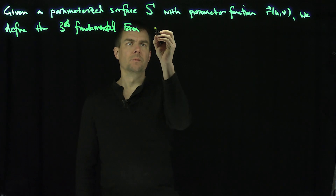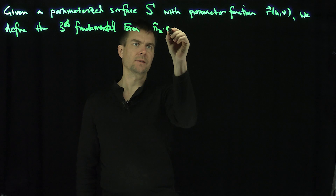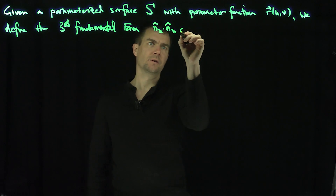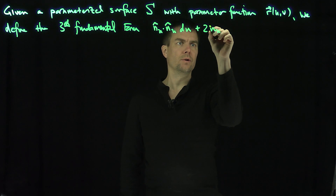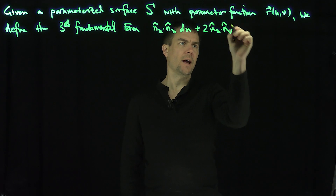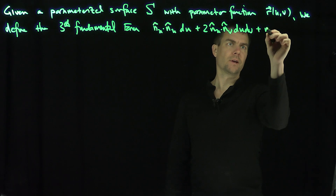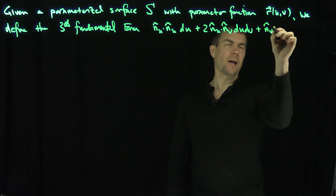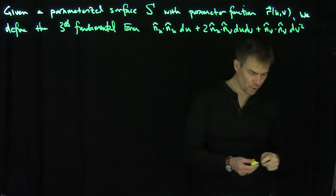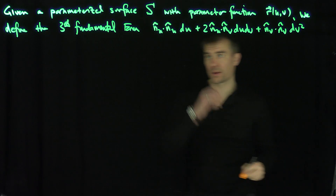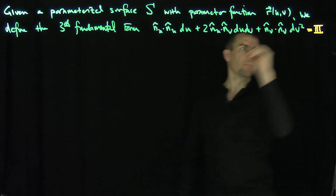It's going to be N_U hat dot N_U hat dU squared, plus two N_U hat dot N_V hat dU dV, plus N_V hat dot N_V hat dV squared. Of course, we can also write this equivalently using norms. This is our third fundamental form, III.